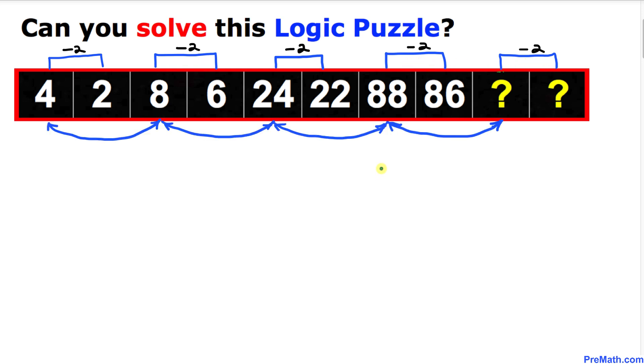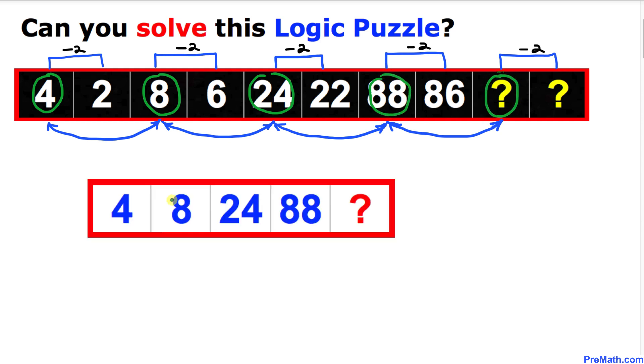And in this next step let's focus on these numbers: this 4, 8, these alternating numbers, 24, 88, and this question mark. And here I have copied those numbers down separately to make things simple.